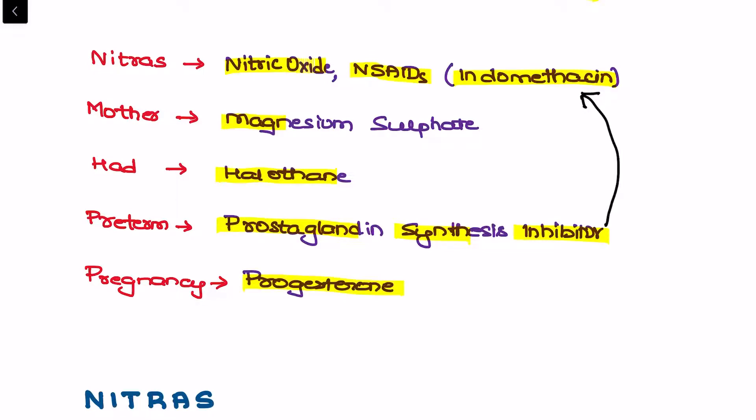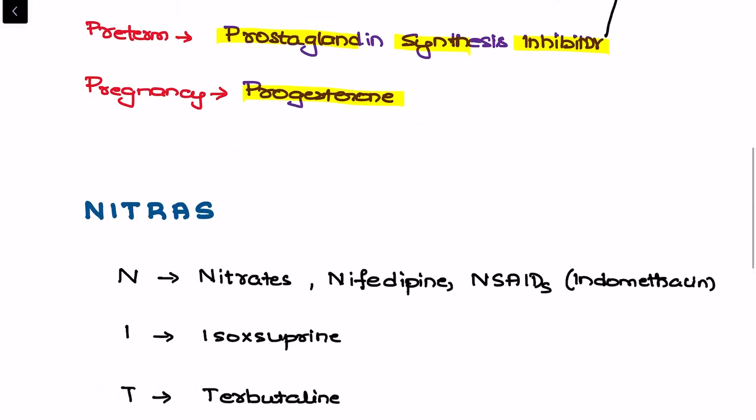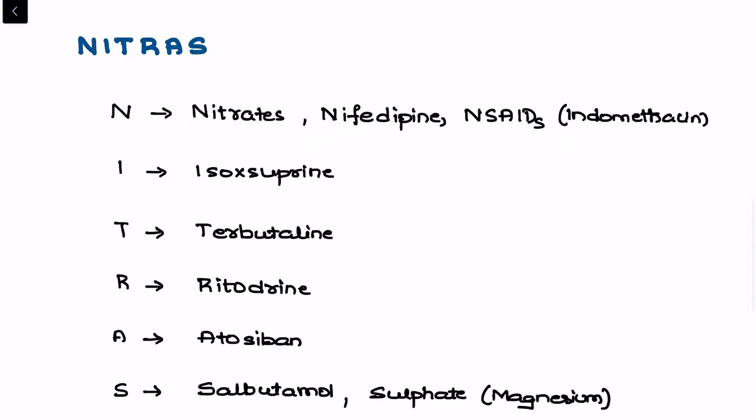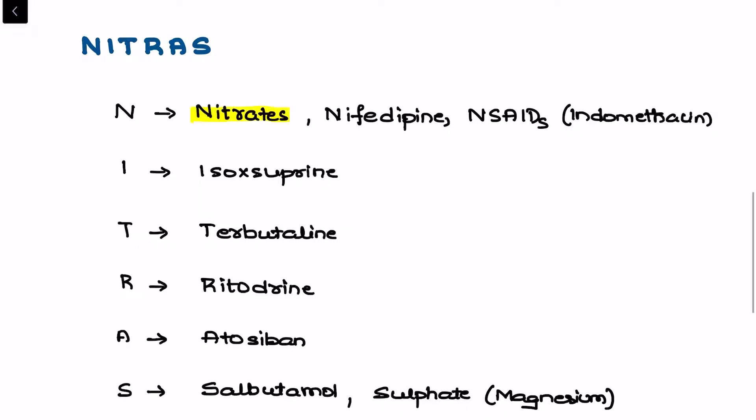There is one more simple way of remembering the drug list of tocolytics, that is just remembering NITRAS. In NITRAS, N stands for nitrates. Nitrates increase nitric oxide which relaxes smooth muscle cells.